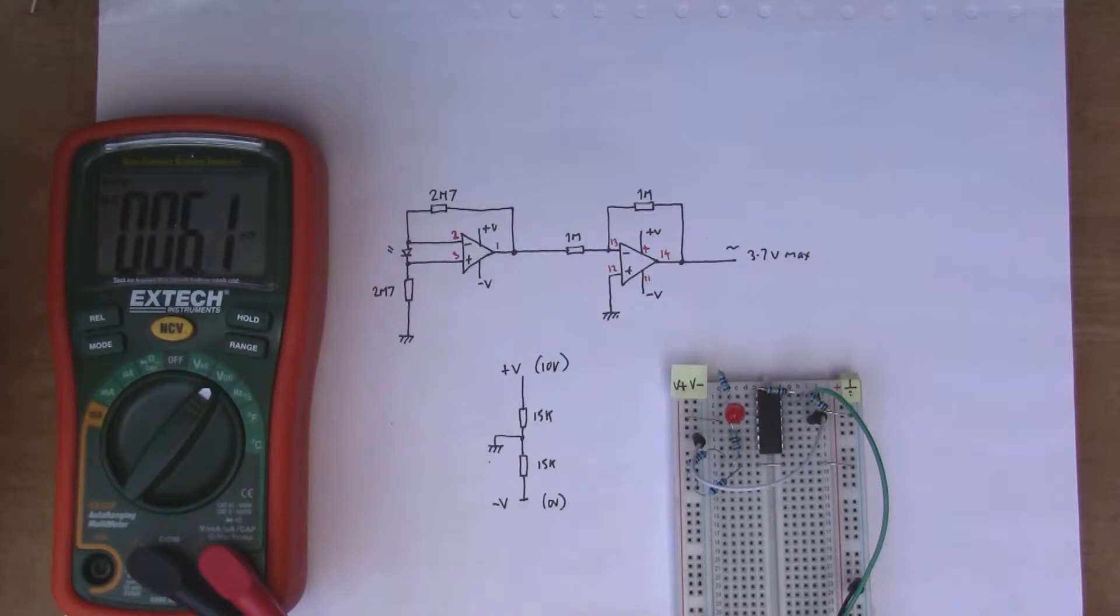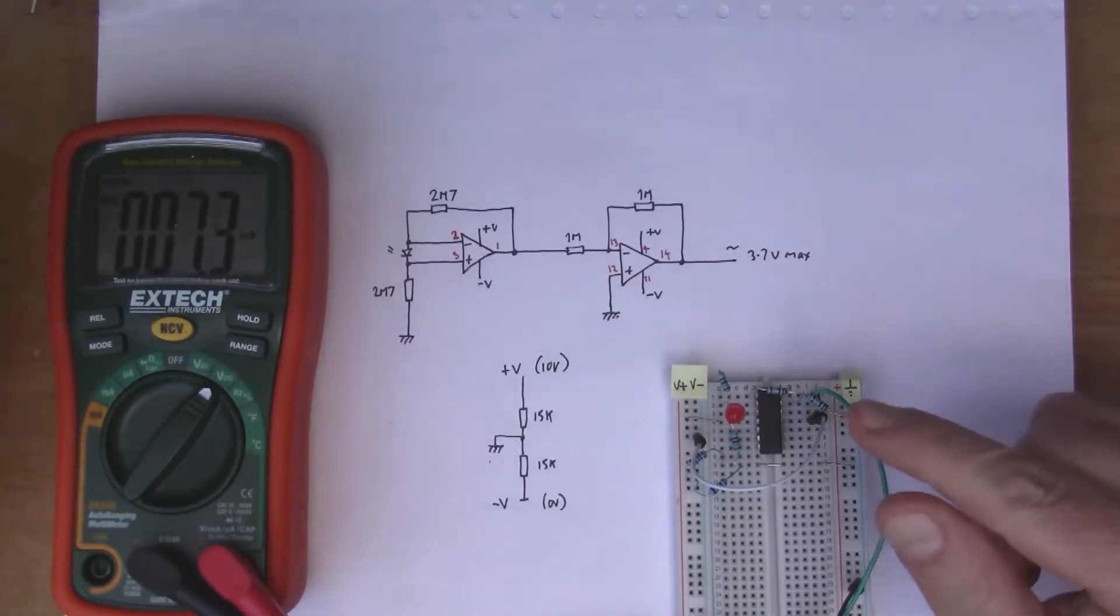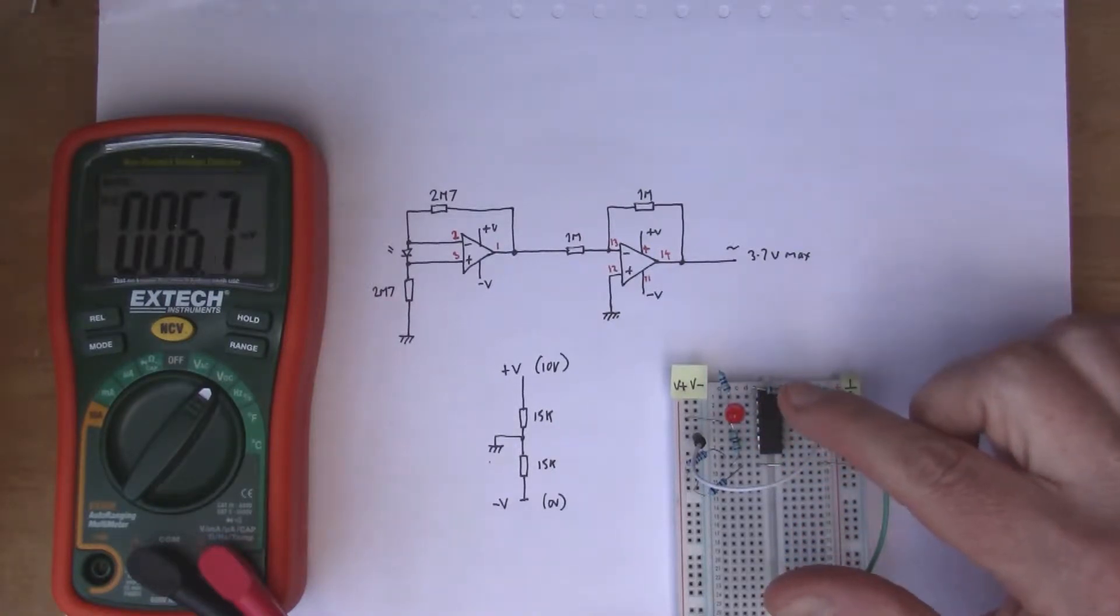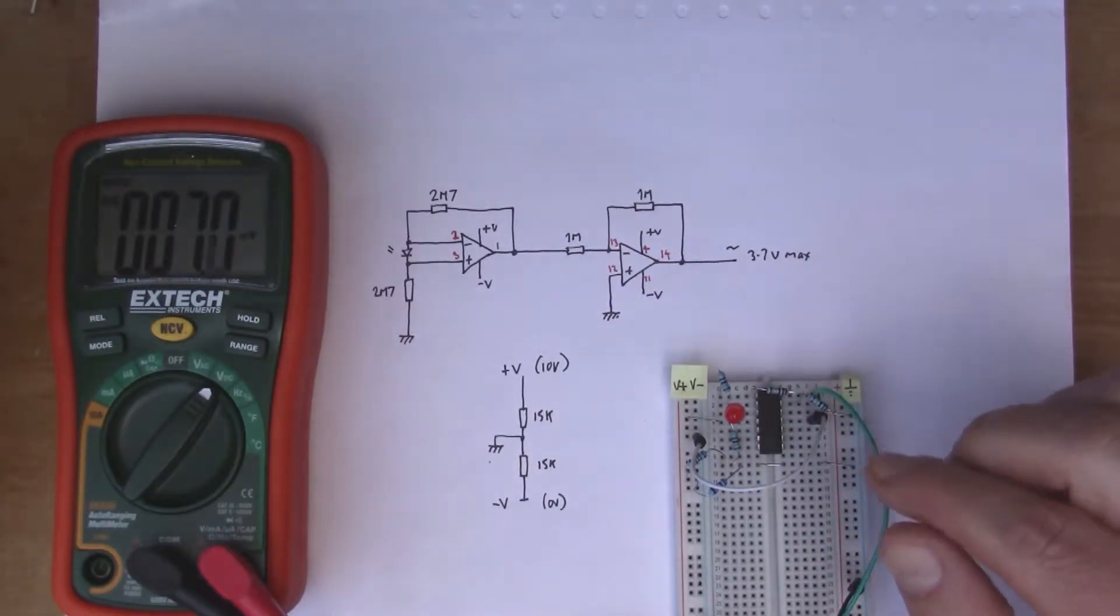About a month ago I made a video where I was using an LED to detect light. It turns out you can get quite a big voltage out of an LED but you don't get very much current, it's a really immeasurably small amount of current.